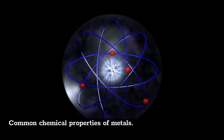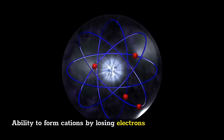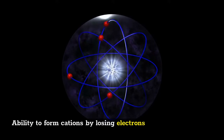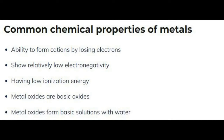Common chemical properties of metals: ability to form cations by losing electrons; relatively low electronegativity and low ionization energy. Metal oxides, or basic oxides, form basic solutions with water.